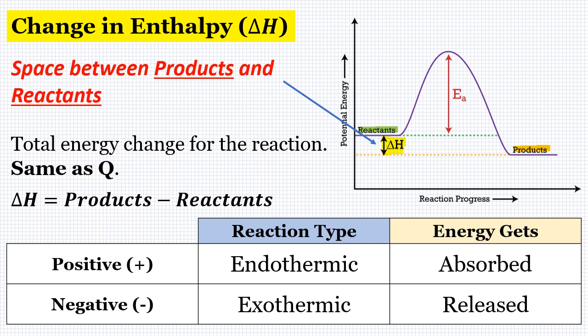Delta H can be positive or negative. If it's positive, that means it's an endothermic reaction — energy is being absorbed. If it's negative, that means it's an exothermic reaction and energy is being released. Looking at our diagram, our reactants are sitting much higher than our products. Because the reactants are higher in potential energy than the products, if we determine delta H using the formula products minus reactants, we're going to get a negative number, which means this is an exothermic reaction.